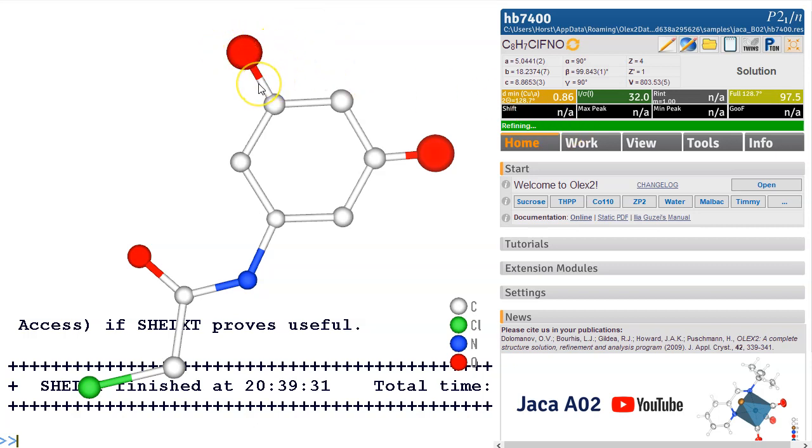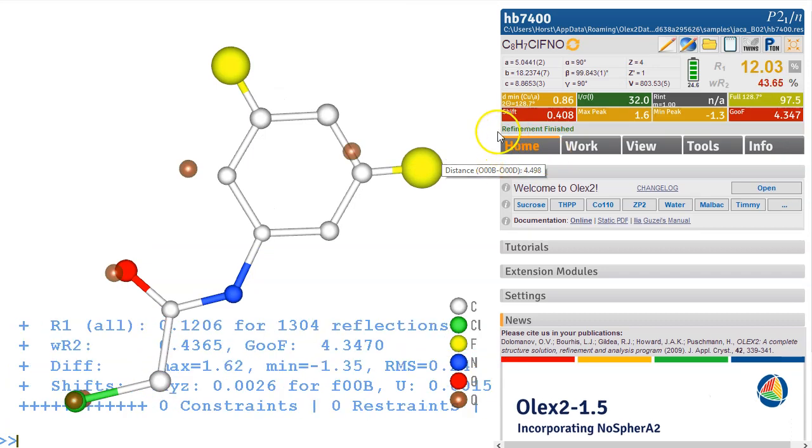I suspect, let's have a look at the distance, it's 1.258, it's not a carbon so I suspect these are both fluorine atoms. Name F. Let's refine this, so this is going to make it worse obviously because they're disordered over those two positions.